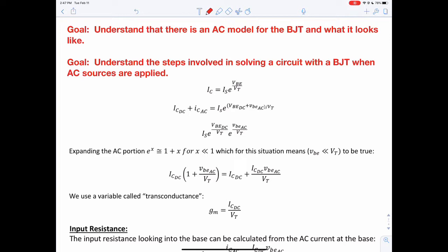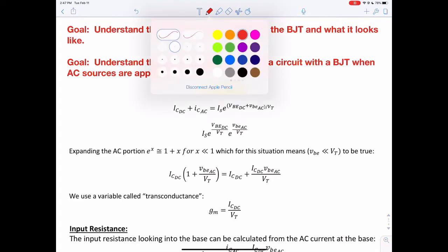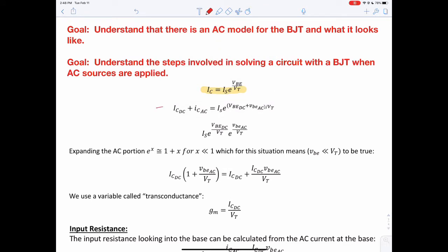The first thing that we want to look at is going back to the current flow through the BJT. If you remember, IC was equal to IS times e raised to the VBE over VT, where this VBE is a DC value. When we apply a DC and AC source, the current is actually going to be a summation of both of those, the DC value and the AC value.